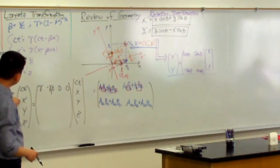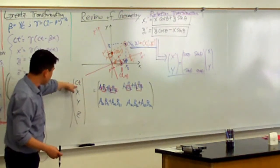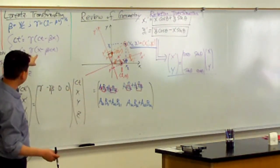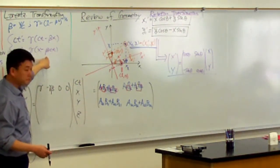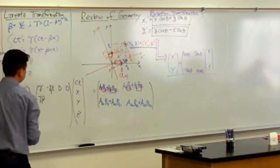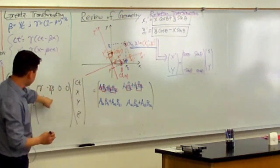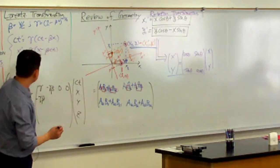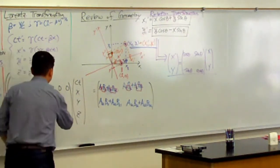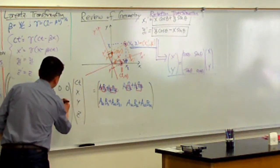For the x prime, so let me go in order. So, what I need to get the correct factor for Ct, I need a factor of minus gamma beta. So, all right, minus gamma beta times, I'm sorry, that's the times that gives me that. And then the next entry will give me x. So, that's gamma times x. So, gamma. And then I don't want y or z, so it's 0 and 0.